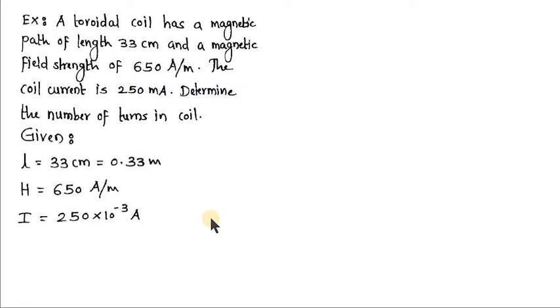By these three things, we need to determine the number of turns to be kept in a coil so that when it carries a current of 250 milliampere, it produces a magnetic field of strength 650 ampere per meter. Let's start solving it.